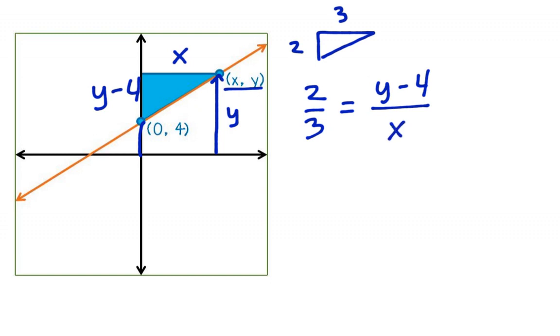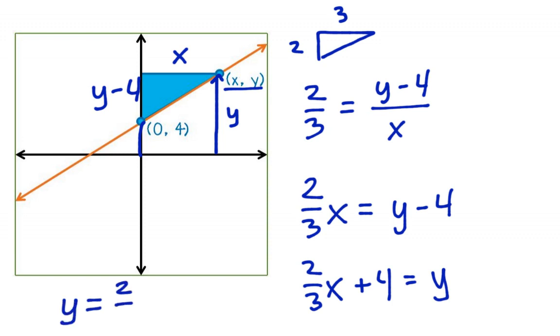If we multiply both sides of this equation by x, we will get 2/3 x equals just the numerator left over, y minus 4. And then if we add 4 to both sides, we will get 2/3 x plus 4 equals y. This can all be rearranged so that the y is on the left side, and we get y equals 2/3 x plus 4,